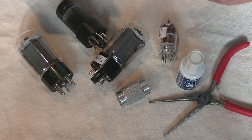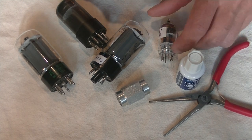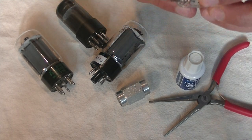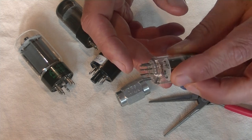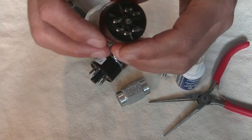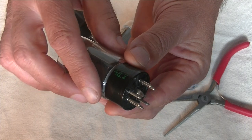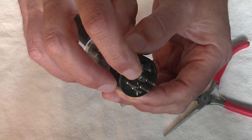Today we're going to talk about what to do with bent pins and trickier still, octal tubes that have the guide pin broken right off.